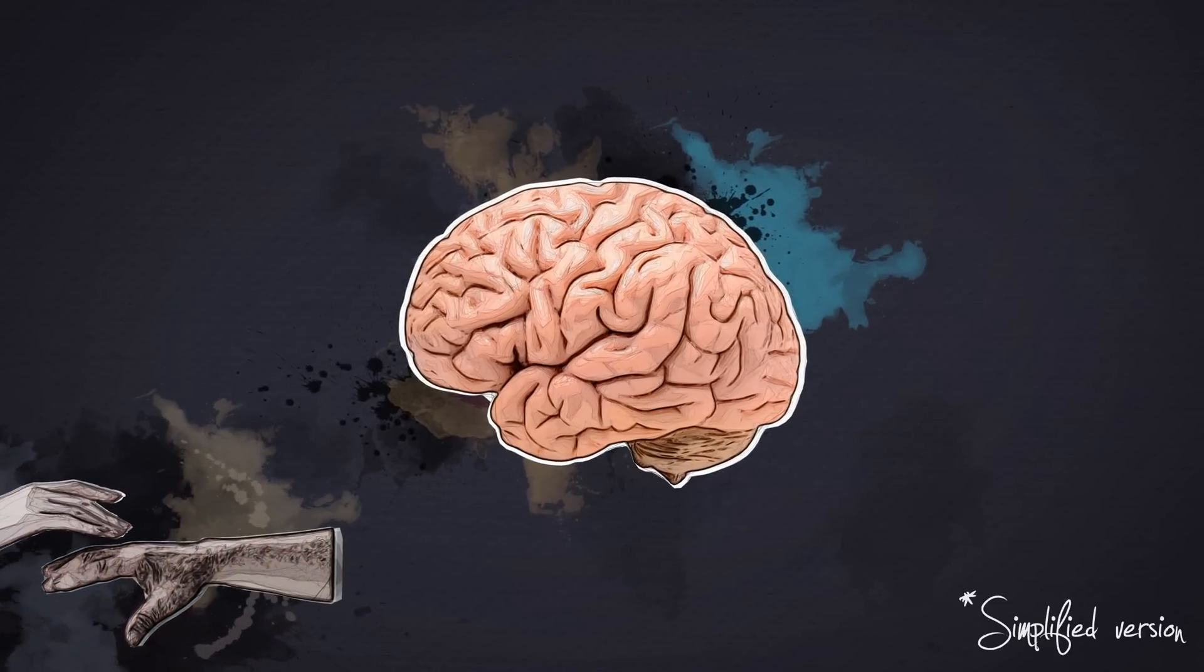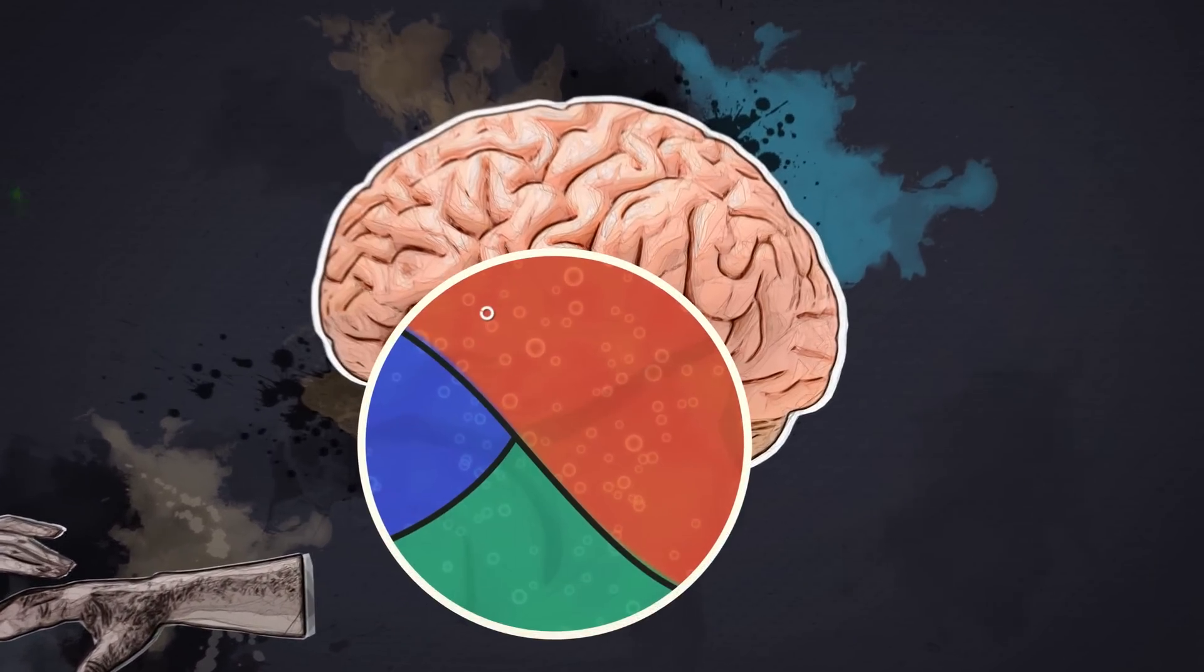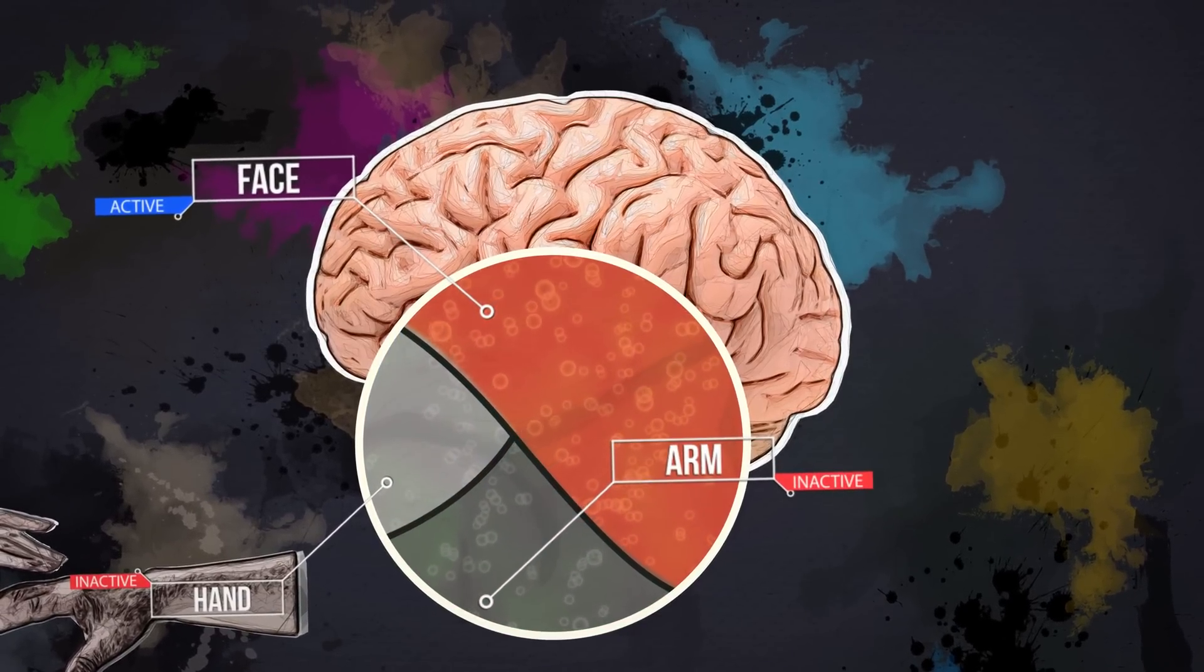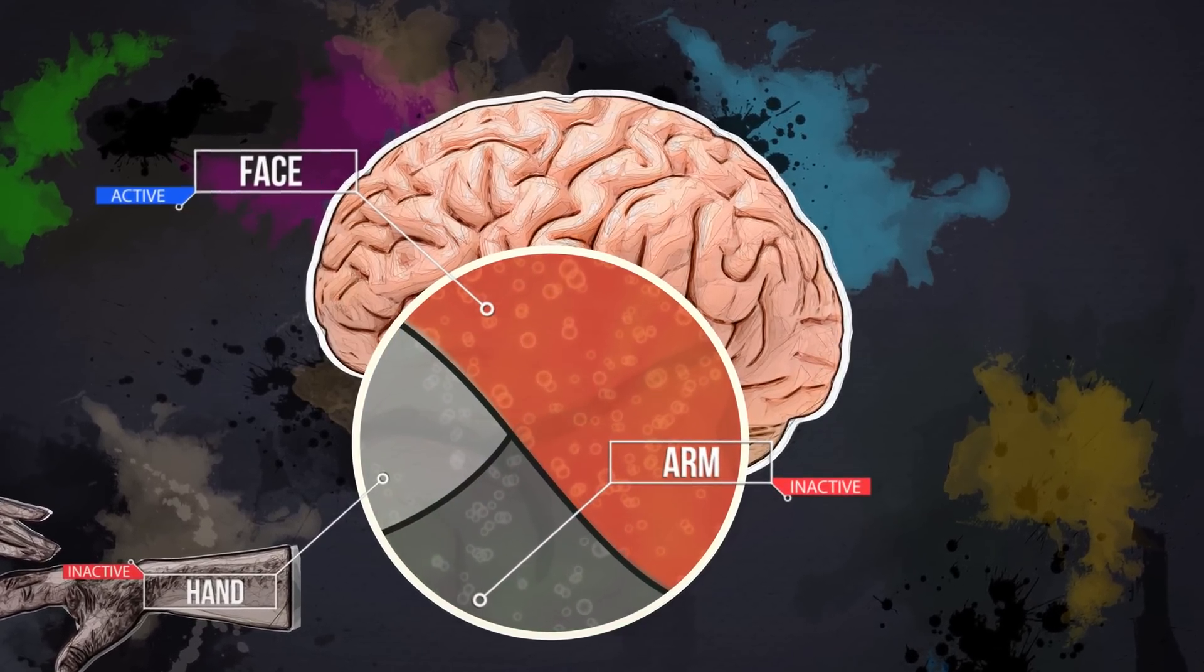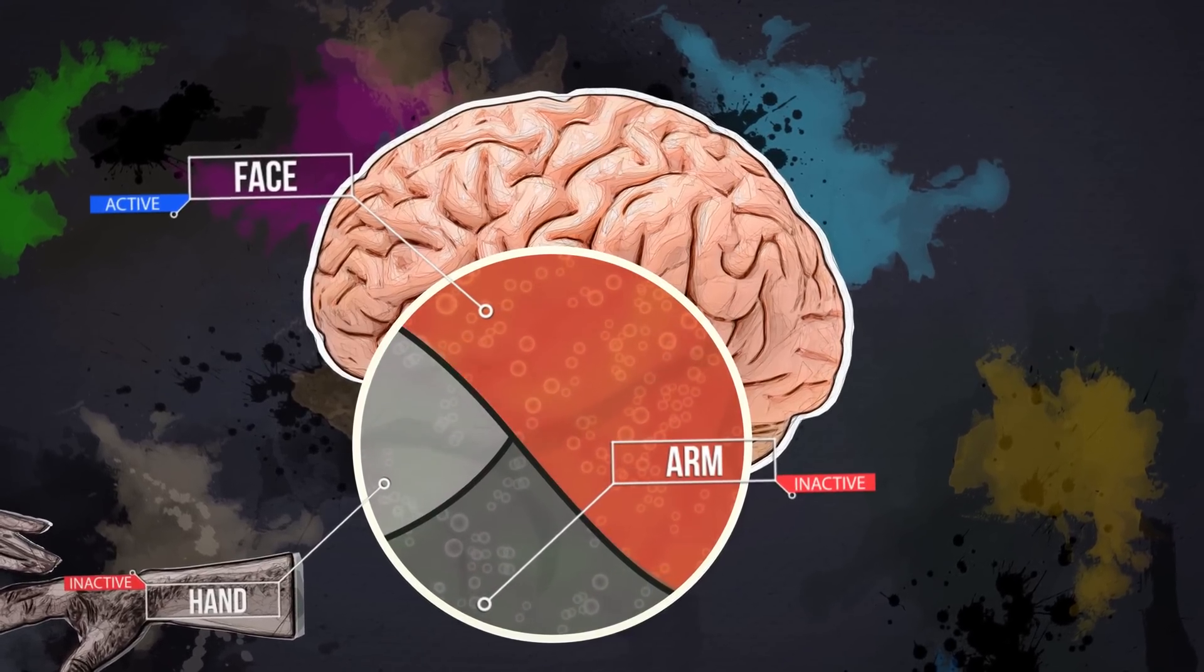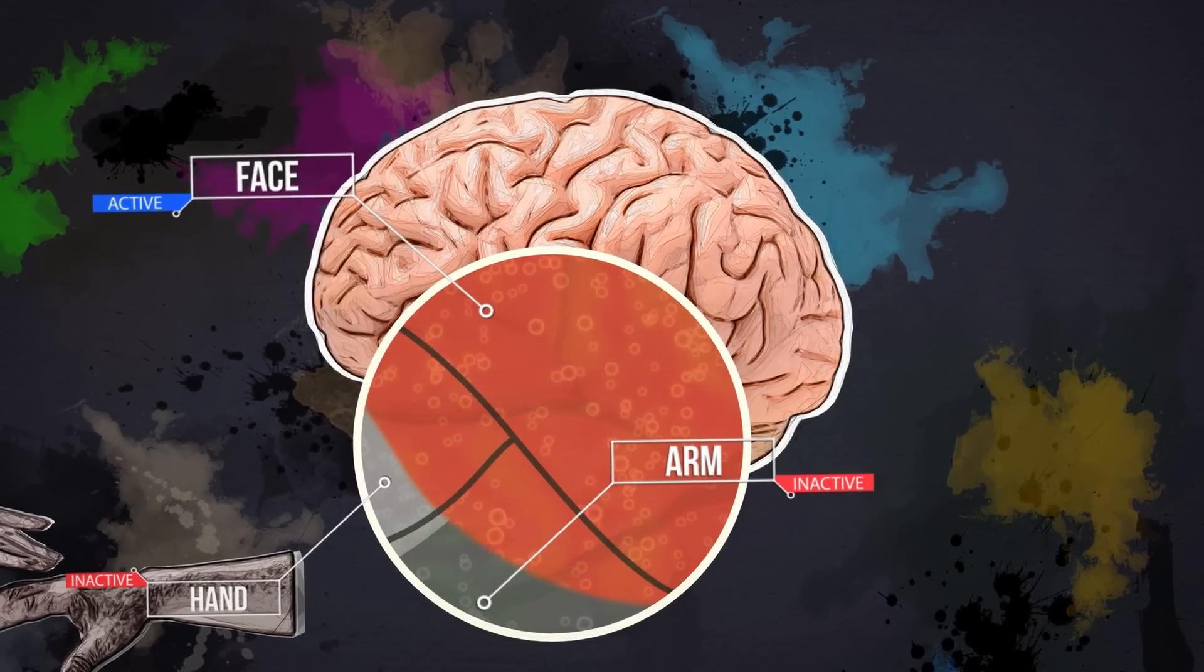But when you lose a limb, no sensation is given to this part of the brain anymore because there's no limb to be touched. It turns out that when neurons in the brain are really inactive for a long time, the neighboring regions want to expand and fill that void. So what happens next is a sort of reorganization of the brain's neural connections.